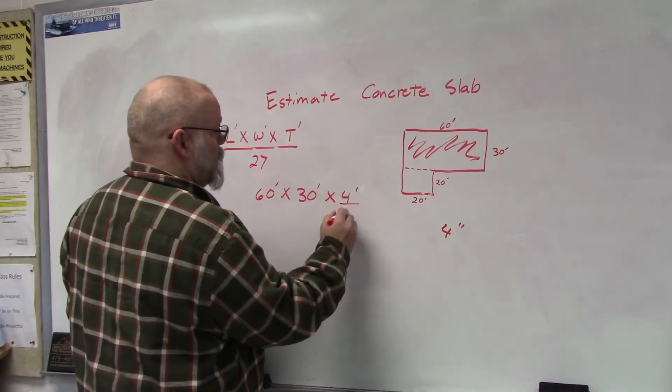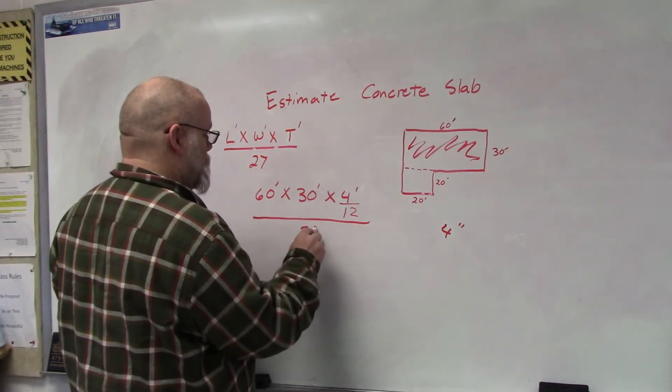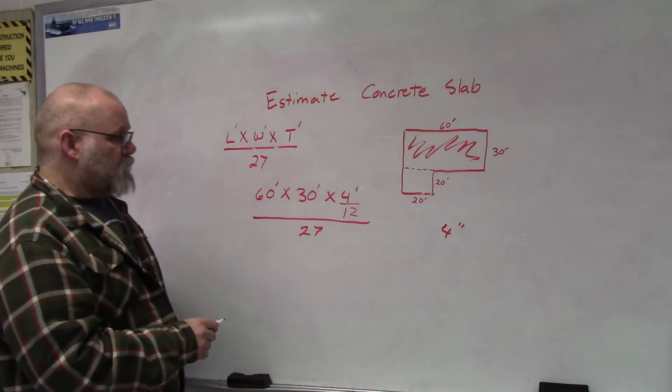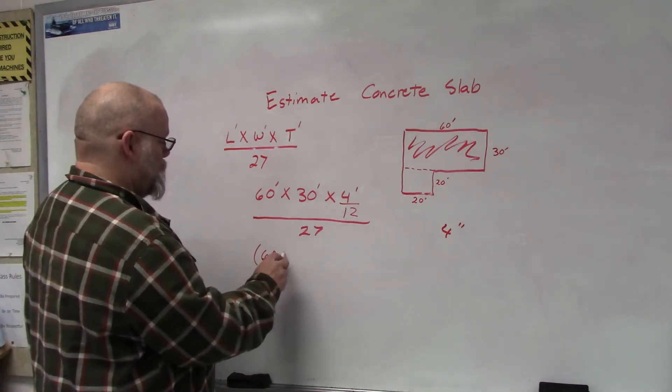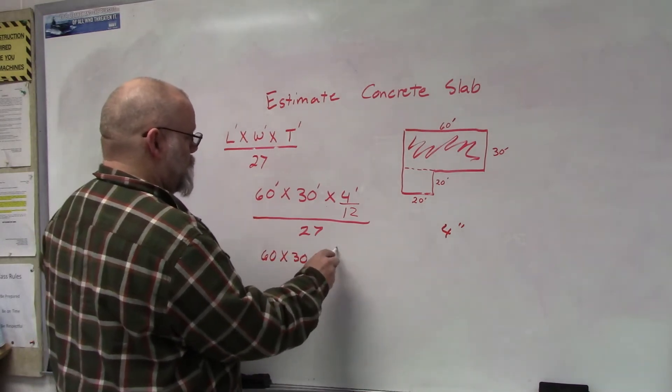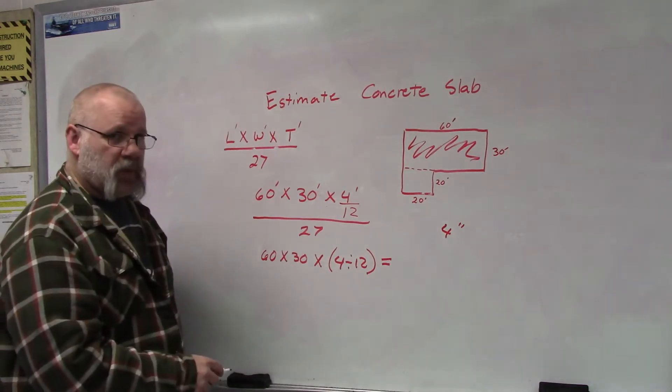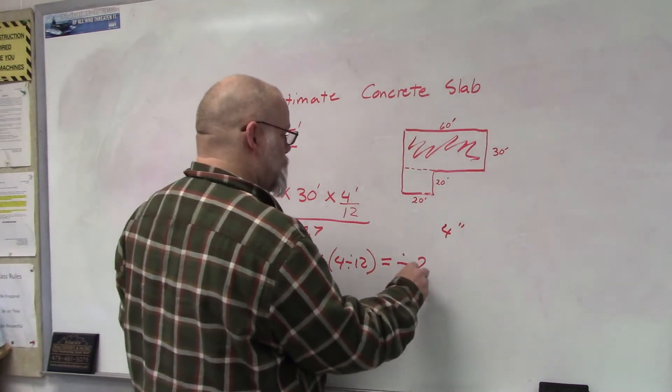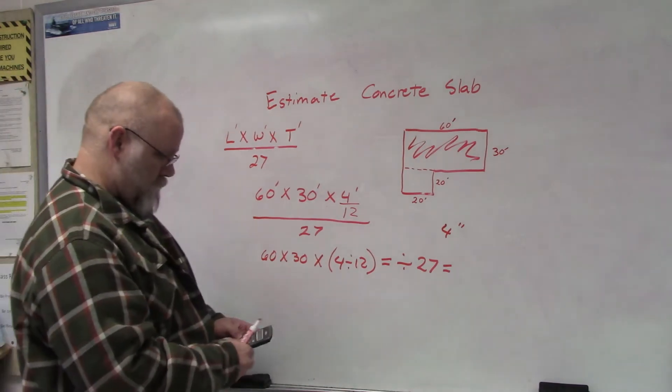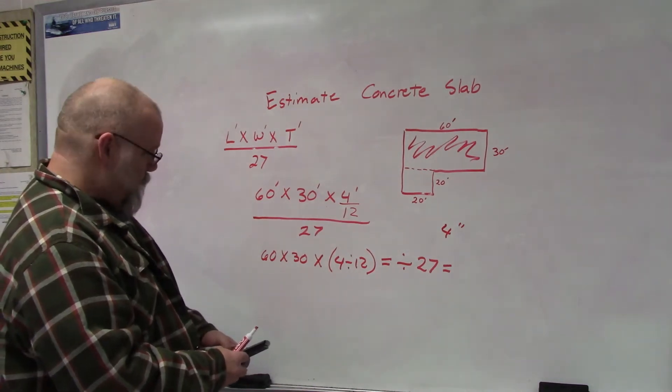Then I'm going to divide the whole thing by 27. If you have a good calculator, you would take 60 times 30 times 4 divided by 12, and then you would hit equals, divided by 27, equals. If you do that correctly, you would get 23 cubic yards for that section.